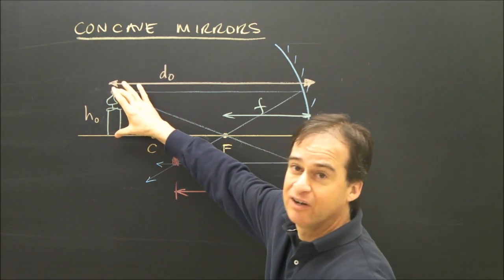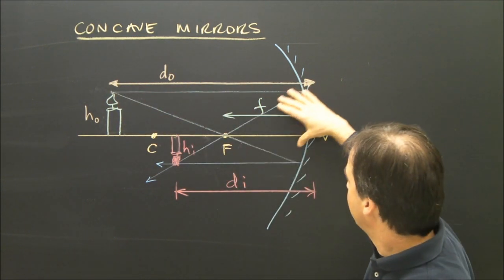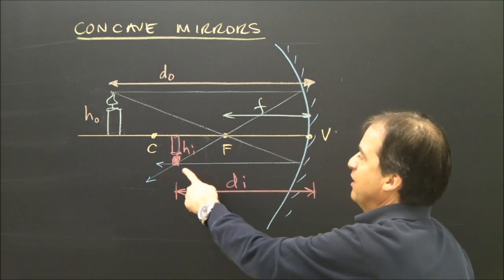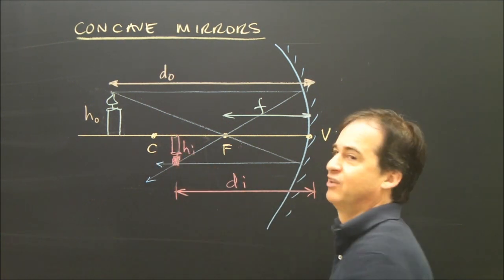I put a candle here. This is my object. And I use a couple of rays, the parallel ray and the focal ray, to locate my image, a rather poorly drawn, upside-down candle.